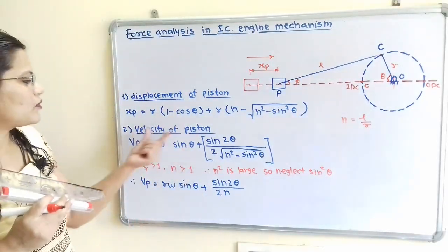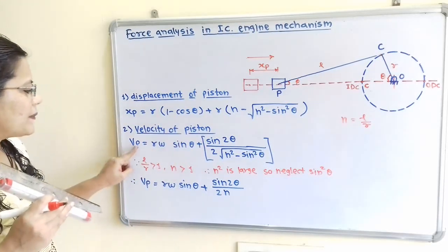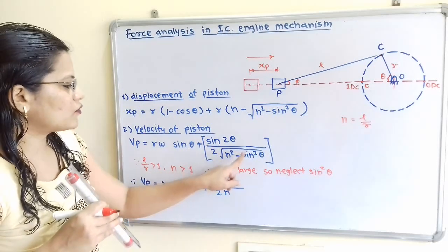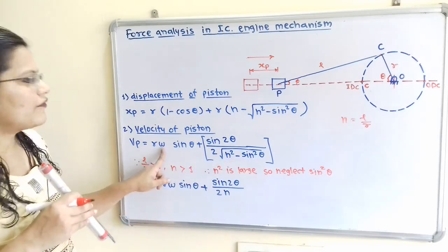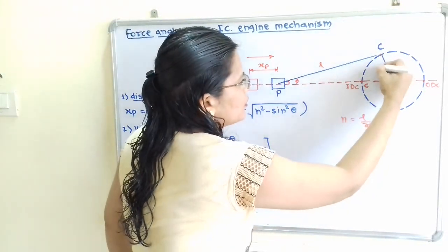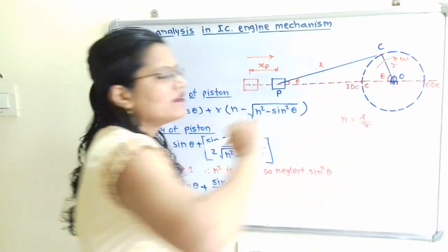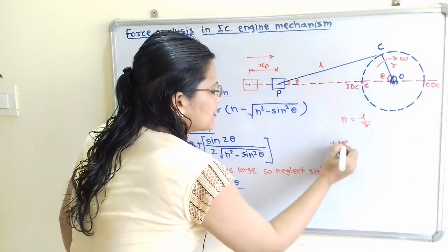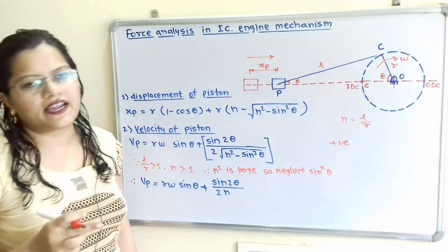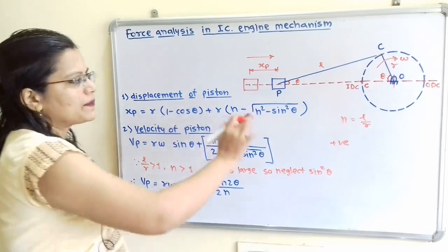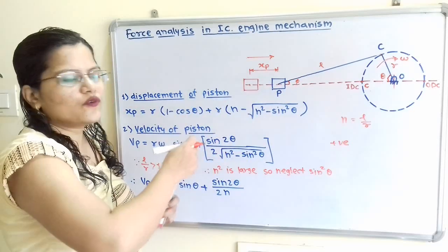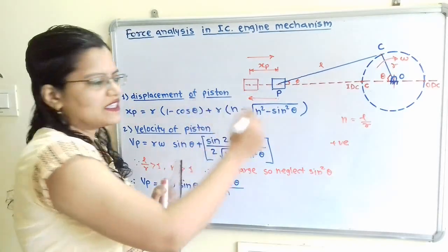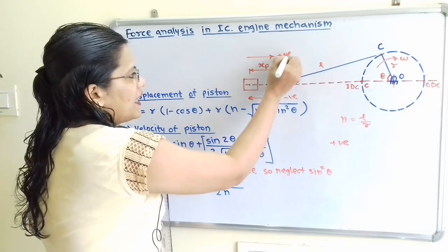For velocity of the piston, VP = R·omega·(sin theta + sin 2theta / (2√(N² - sin²theta))), where omega is the angular velocity of the crank. When VP is positive, the piston moves towards the right hand side. When VP is negative, the piston moves towards the left hand side.